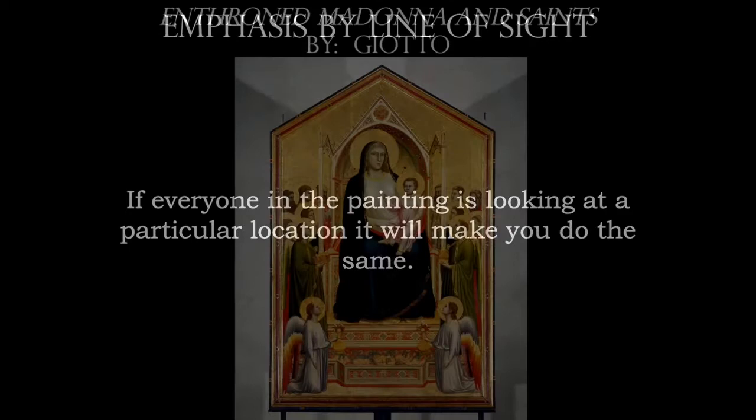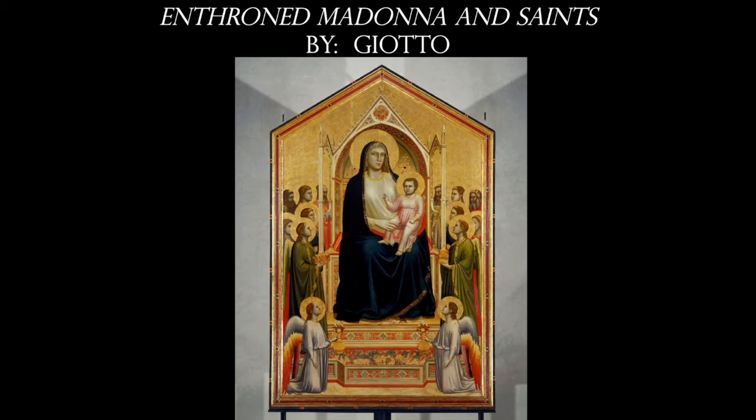Even though we just talked about the Enthroned Madonna and Saints in terms of emphasis by scale, and we definitely have hieratic scale here, we also have emphasis by line of sight. One of the ideas that makes this composition a success is that all the angels and saints around the throne are staring at the Madonna, letting us know that we need to be looking at her as well. So that helps to emphasize the Madonna as the focal point.